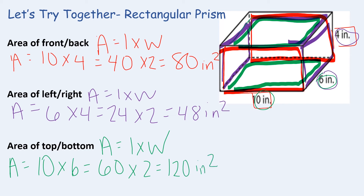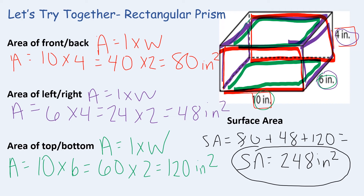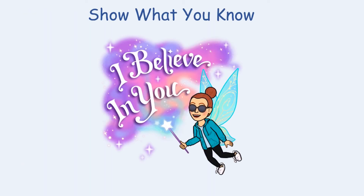Just like all the other shapes, the last step is to add all the areas together. 80 plus 48 plus 120 equals our surface area of 248 inches squared. The surface area for this rectangular prism is 248 inches squared. Now it's your turn to show what you know about nets and surface area — I believe in you.